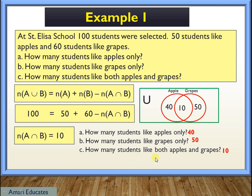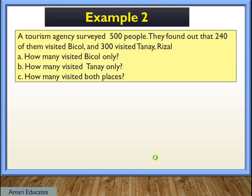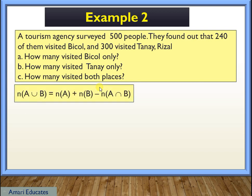Let's have one more example. A tourism agency surveyed 500 people. They found out that 240 of them visited Bicol, and 300 visited Tanay Rizal. How many visited Bicol only? How many visited Tanay only? And how many visited both places? Again, there are two groups that we are considering, or two sets. So let's have this formula.